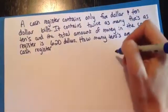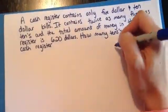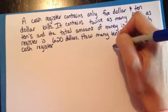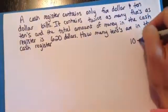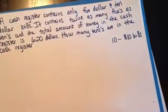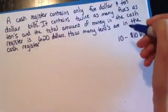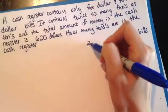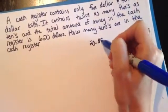So, in other words, what I'm saying is, if, for instance, I had 10 $10 bills in my cash register, then that would mean, according to this problem, I had twice as many, so I would have 20 $5 bills.